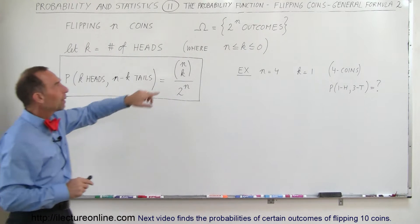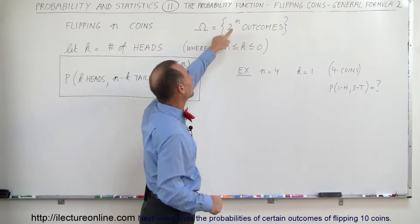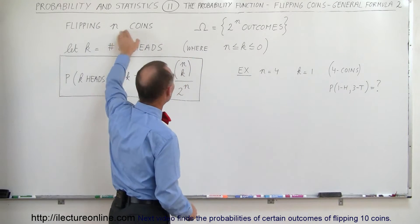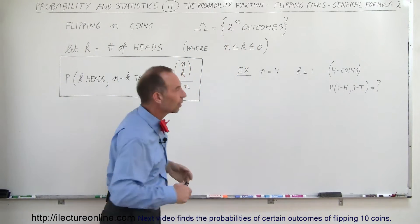The sample space, the number of outcomes in the sample space, is simply going to be 2 to the n power. In case if n is 4, 2 to the fourth power is 16, that means there's going to be 16 outcomes in the sample space.